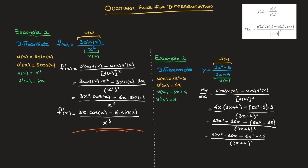Notice that I didn't open the second pair of parentheses right away, because it's being subtracted. To avoid making any sign errors, I take care of that in a second step. This equals 12x squared plus 16x, minus everything inside the parentheses — so that's 6x squared plus 15 — all written over 3x plus 4 squared. Finally, gathering like terms on the numerator, dy dx equals 6x squared plus 16x plus 15, over 3x plus 4 squared. And that's the final answer.